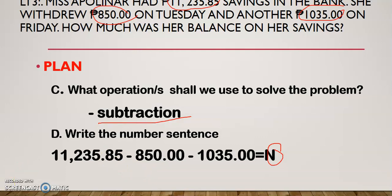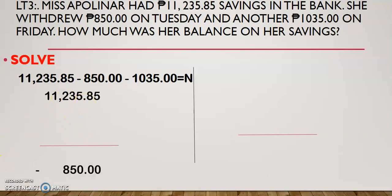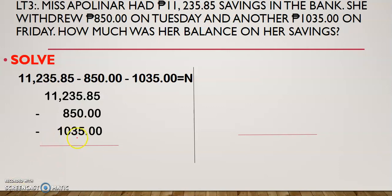Now that you have a plan, the next step is to execute your plan — you have to solve. This is your number sentence and you have to solve that. In performing addition and subtraction of decimals, you have to arrange the numbers vertically. Let us arrange: 11,235.85 and then 850 and then 1,035. It is very important in addition and subtraction of decimals that the decimal points are aligned.